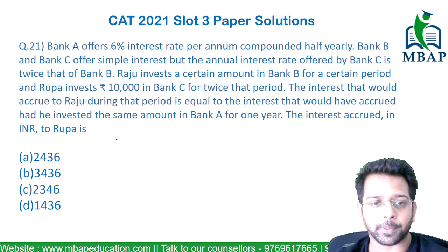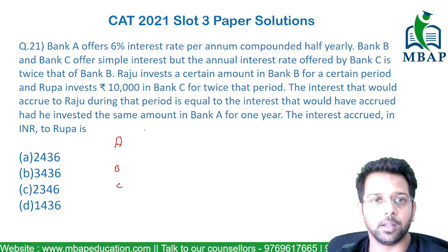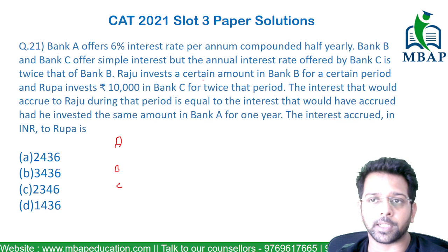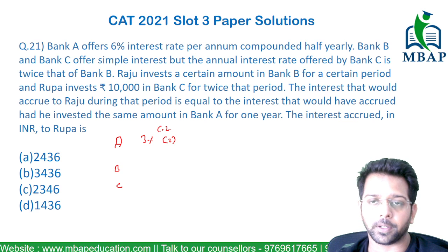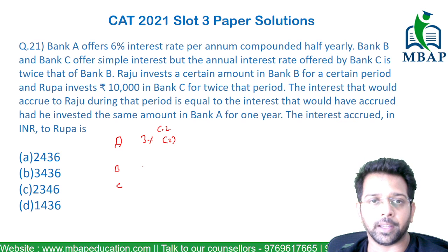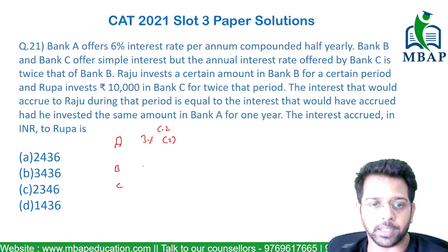Let's put the respective banks as A, B, and C. The interest given by A is 6% half yearly, so basically you are getting 6% two times in a year, and this is compounded. Bank B and C are given at simple interest, but C is getting twice the rate of what B is getting. So if B is R, then C is 2R.